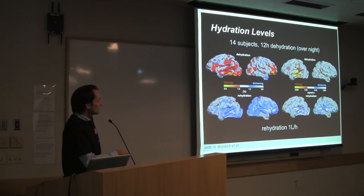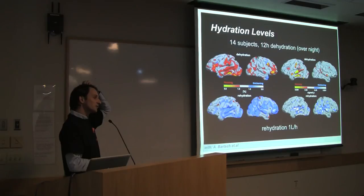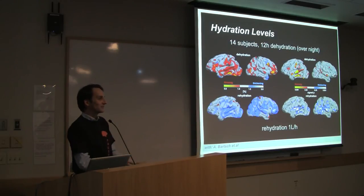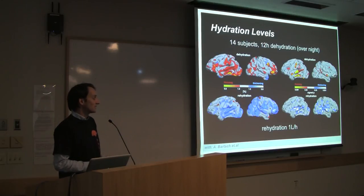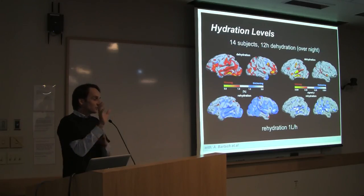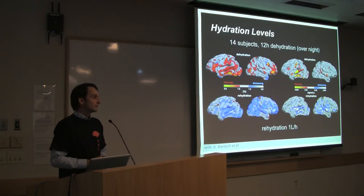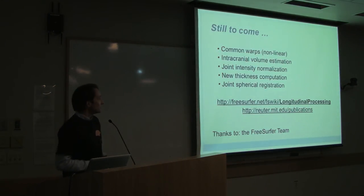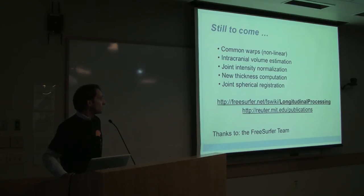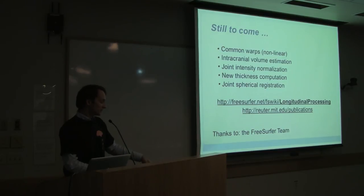It's also important that methods can detect both increases and decreases — some longitudinal tools only find decreasing brains, which is biased. You can test for this by reversing time point order and seeing if you get the opposite result. Future additions to the longitudinal stream may include non-linear warps, joint anatomical volume estimation, and better normalization steps for bias field computation, though this may still take a few years. There are web pages and publications on longitudinal processing available.